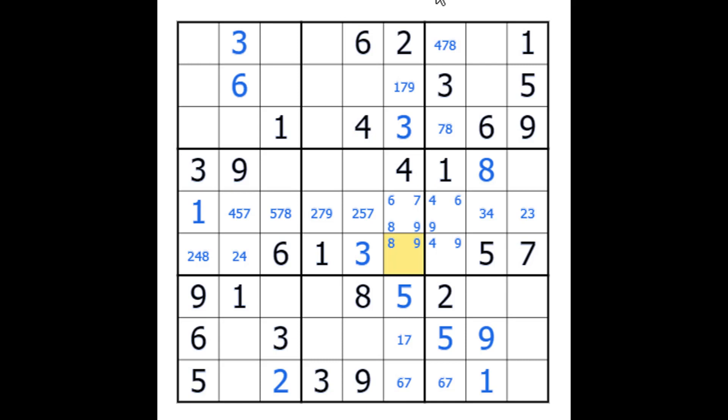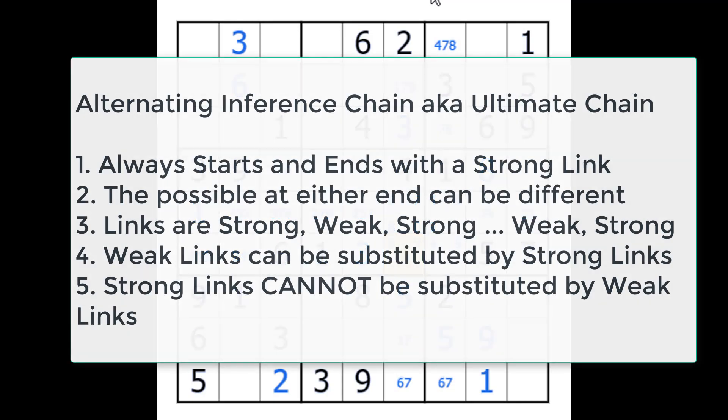And what it means is we're going to start with a strong link, and the chain is made up of strong, weak, strong, weak, and it always ends with a strong. And a weak link can always be substituted by a strong link.